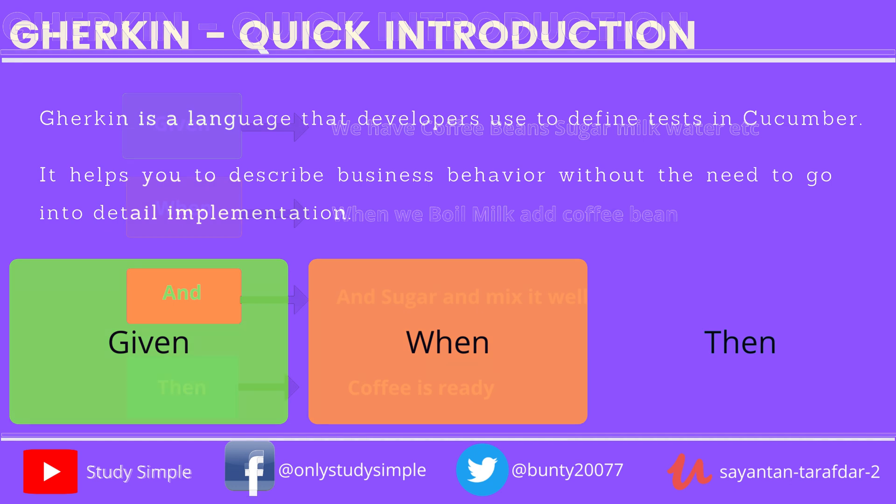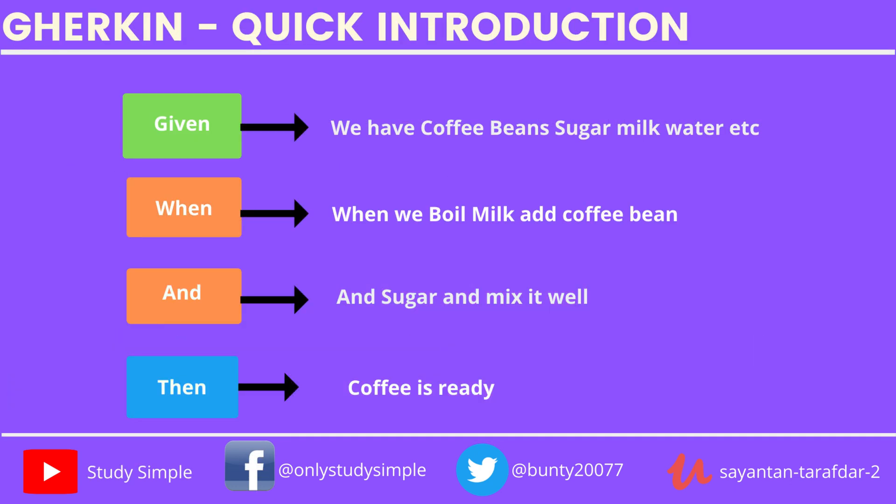These scenarios can be applied similarly to other use cases. For example, logging into Facebook: in the Given part, we have the Facebook link, username, and password. In the When part, we open Google Chrome, hit the link, and enter the username and password — these are all action steps. In the Then part, the output is that we have successfully logged into Facebook. If we successfully log in, the end product is fine; if there is an error, we throw a bug.